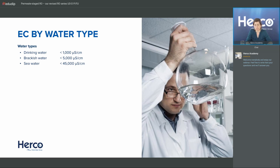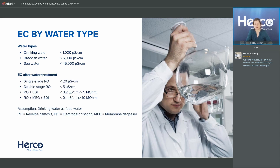Sea water is around 35,000 to 45,000 microsiemens per centimeter. Now if we look at where we end up after treatment: a typical standard single-stage RO unit — the UOD series, for example — typically gives a conductivity of less than 20 microsiemens per centimeter in the permeate. It depends on your inflow quality, but with up to 1000 microsiemens per centimeter in the inflow, you would get less than 20 in the permeate.